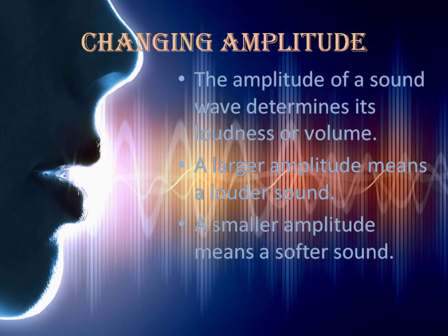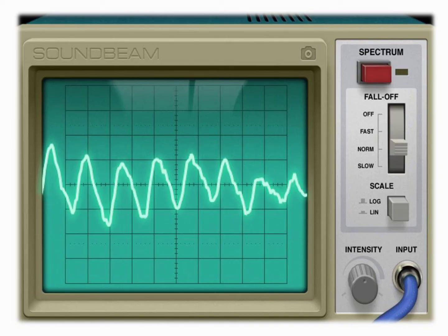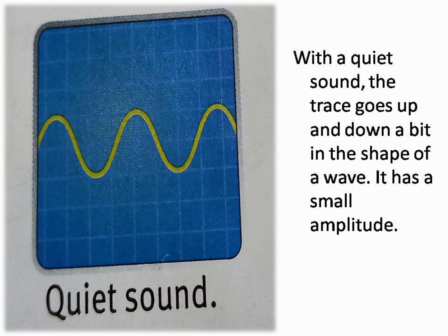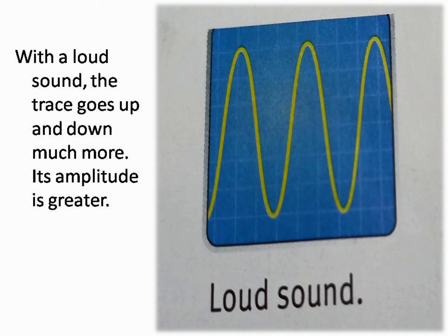Changing amplitude. The amplitude of a sound wave determines its loudness or volume. A larger amplitude means a louder sound, and a smaller amplitude means a softer sound. The figure shows what happens to the trace on the oscilloscope screen when the loudness of the sound changes. When there is no sound, the trace is a flat line, showing the air molecules are not vibrating. With a quiet sound, the trace goes up and down a bit in the shape of a wave — it has a small amplitude. With a loud sound, the trace goes up and down much more, and its amplitude is greater.